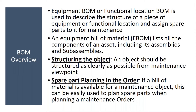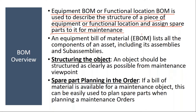The equipment BOM or functional location BOM is used to describe the structure of a piece of equipment or functional location, and assigns spare parts to it for maintenance. Basically, the bill of material gives you the structure of an object. For example, an equipment BOM gives you the structure of that particular equipment — what are the spare parts present and what is the quantity of those spare parts. One equipment may have ball bearings, gaskets, pumps, radiators — all these things are maintained in the bill of material.